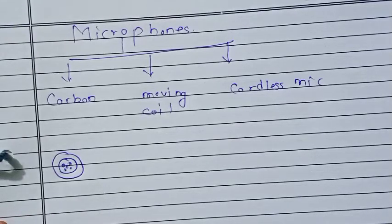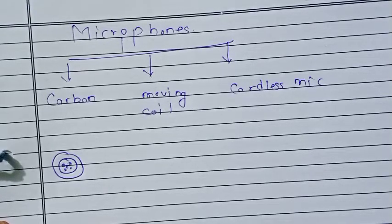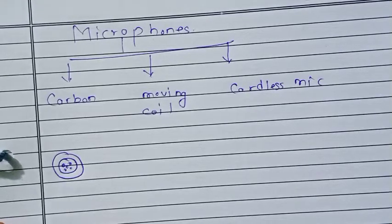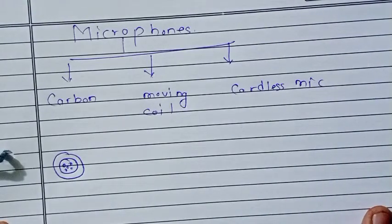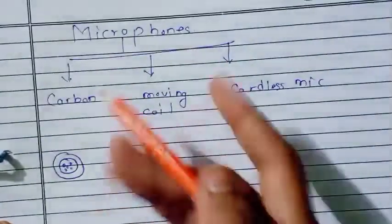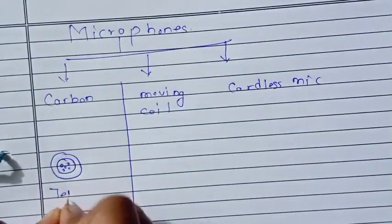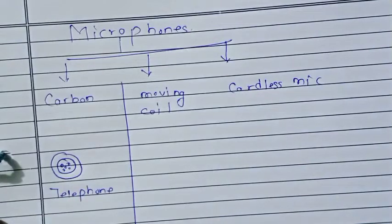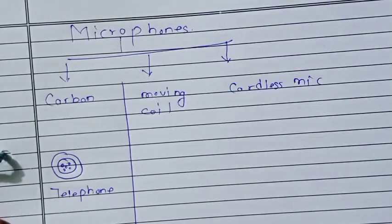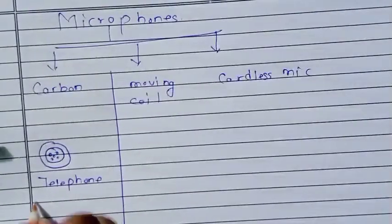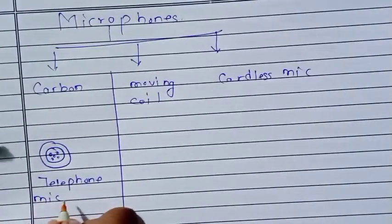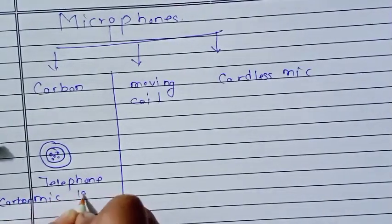The carbon microphone has two metal plates separated by granules of carbon. One plate acts as the diaphragm. It is also known as the carbon button microphone and is used in telephone systems.